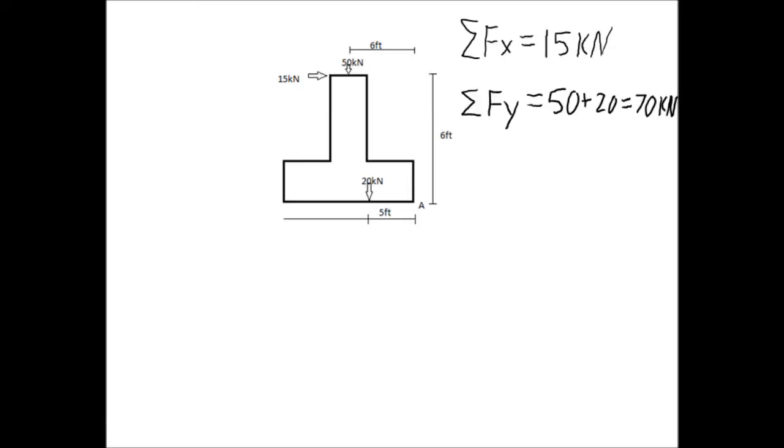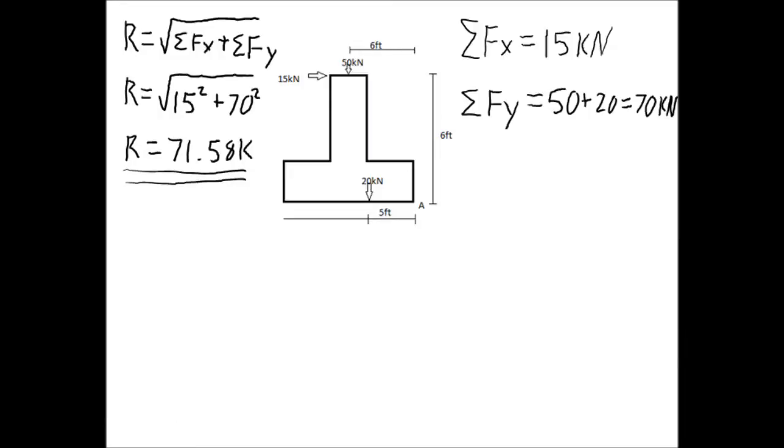Once the summation of x and y forces are found, we can now find the resultant in this problem. To find the resultant R, we must use the formula R equals the square root of summation of Fx squared plus the summation of Fy squared. Our numbers calculated above give us 15 squared for the x forces plus 70 squared for the y forces. From here, we take the square root of 15 squared plus 70 squared, which will give us a resultant of 71.58 kN.